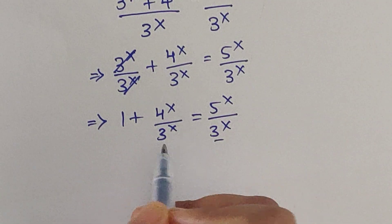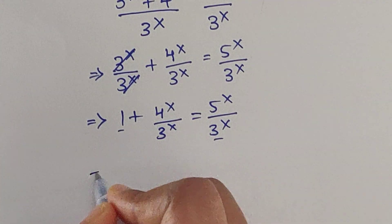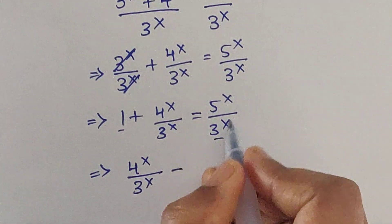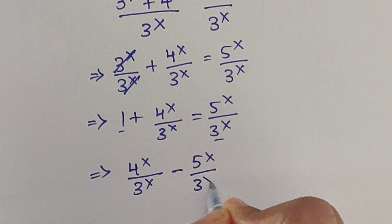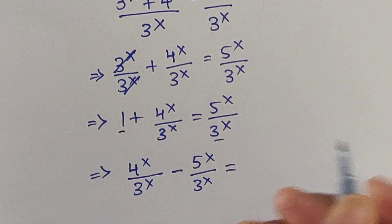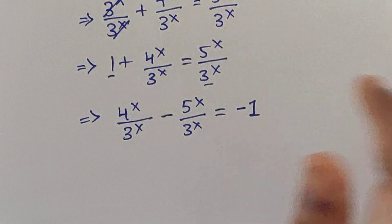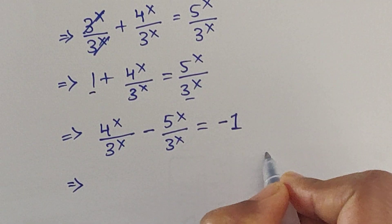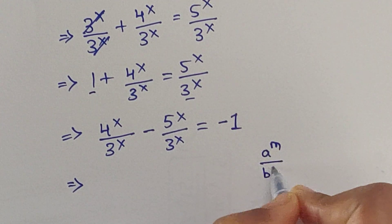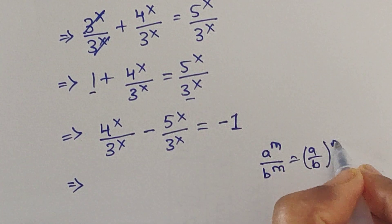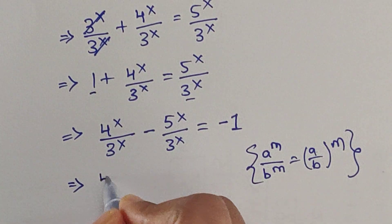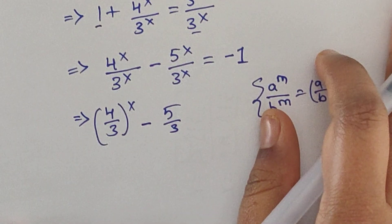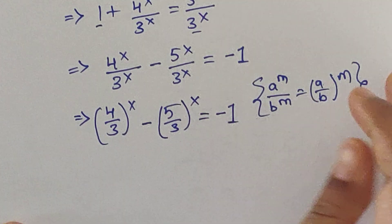Now move the 1 to the right side and the 5 by 3 term to the left side, so we get: 4 to the power of x over 3 to the power of x, minus 5 to the power of x over 3 to the power of x, equals negative 1. We can use the formula a to the power of m divided by b to the power of m equals (a/b) to the power of m, so we can write: (4/3) to the power of x minus (5/3) to the power of x equals negative 1.